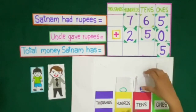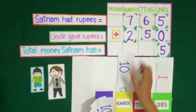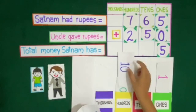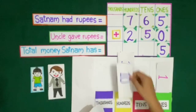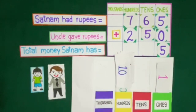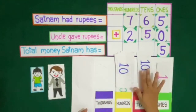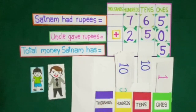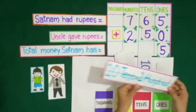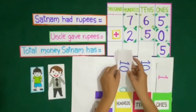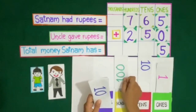Then we will count the 10 rupee notes: 10, 20, 30, 40, 50, 60, 70, 80, 90, 100 and 10. We know that 10 tens are equal to 100, so instead of taking 10 notes of rupees 10 we will take 1 note of rupees 100. So now we have 1 at 10's place and we have got 1 more at 100's place.